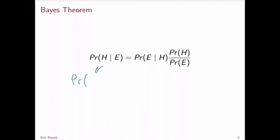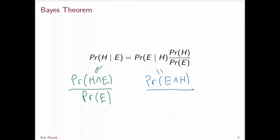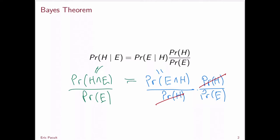We can justify or prove this theorem just using the ratio definition. The probability of H given E is the probability of H and E divided by the probability of E. On the right-hand side, we have the probability of E and H divided by the probability of H, multiplied by the probability of H divided by the probability of E. The probability of H cancels, and we end up with the probability of E and H divided by the probability of E. Since the probability of E and H equals the probability of H and E, both sides are always equal.